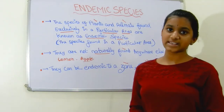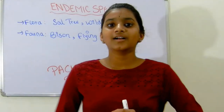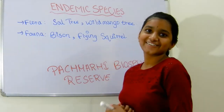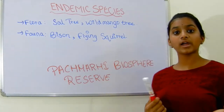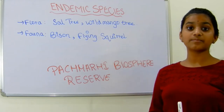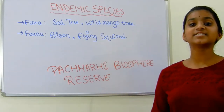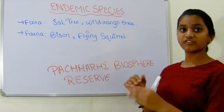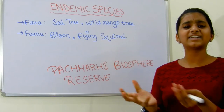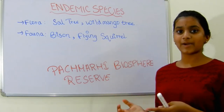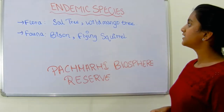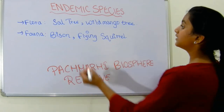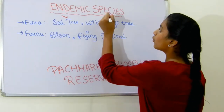Let us see a few more examples of endemic species. We have taken examples from the Pachmari Biosphere Reserve. In all of our videos, for examples, we have only taken Pachmari Biosphere Reserve. This is because in this chapter, Pachmari Biosphere Reserve is the main subject we are going to study. So let us see the endemic flora of the Pachmari Biosphere Reserve — it is the Sal tree and wild mango tree.